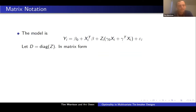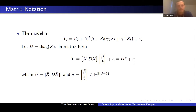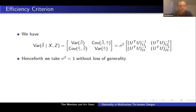Let's get some matrix notation. We let D be the diagonal matrix whose entries are z — plus or minus 1 for treatment assignment. In matrix form, we write y as U delta plus epsilon, where U is x tilde — x with the intercept — and then D times x tilde. Delta is the stacked vector of all coefficients. Importantly, this matrix U is random even conditional on x, because it still contains the z's. Taking variance of delta hat conditional on x and z gives sigma squared times the block matrix inverse of U transpose U, where the bottom right block is the variance of gamma hat. Since sigma squared appears as a multiplicative factor everywhere, without loss of generality we take it to be one.